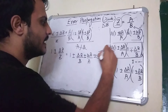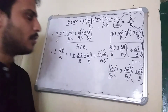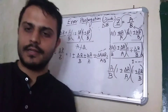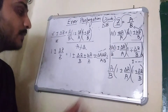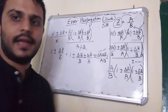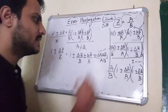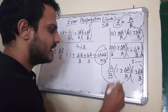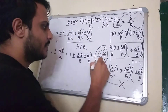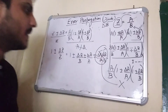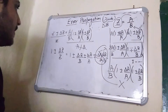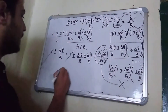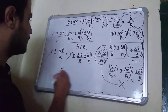Now, delta A and delta B are small terms, so their product is going to be very small, and it is also divided by AB, making that result negligibly small. So we again ignore that term. And at last the 1 on the left side cancels with the 1 on the right side.